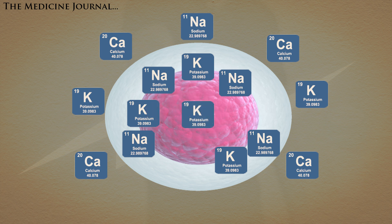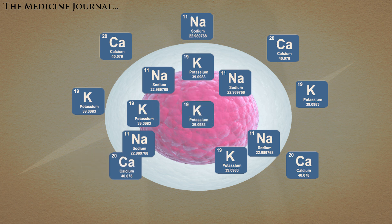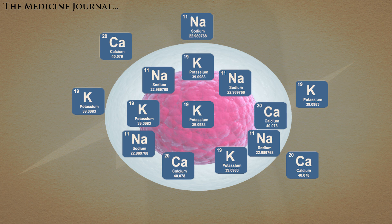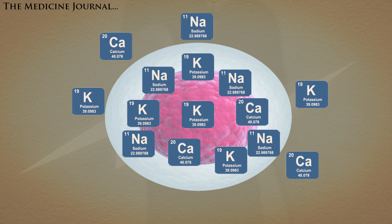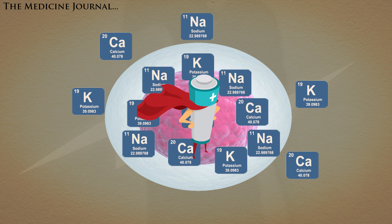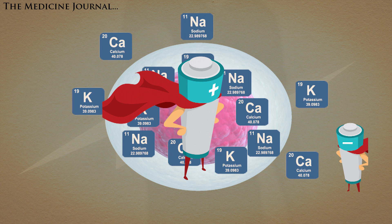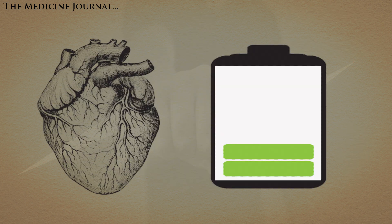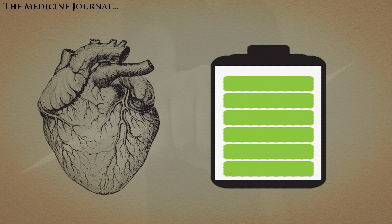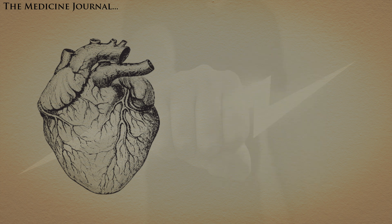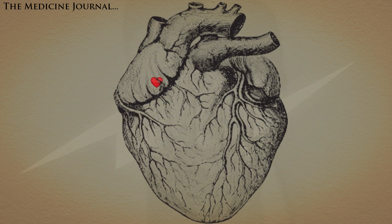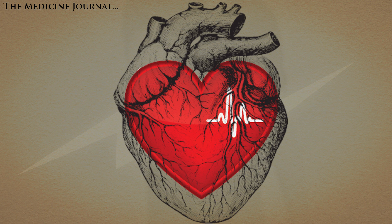When the charge reaches a certain point, calcium channels in the cell membrane open up and allow calcium to enter. This makes the interior of the cell extremely positive compared to the outside, known as an action potential. Once that potential reaches a certain point, it has enough power to discharge down the nerves of the heart, causing the muscles to contract and your heart to beat.